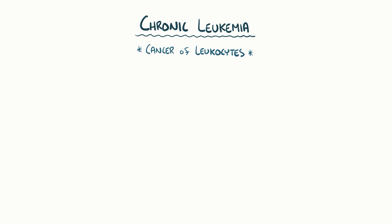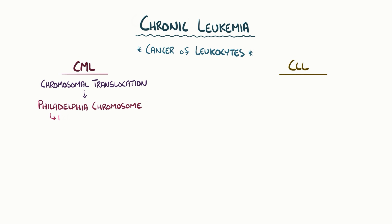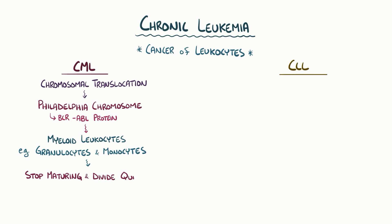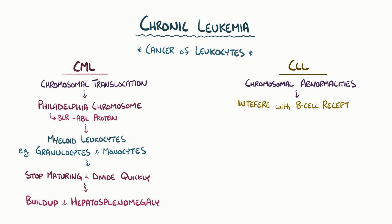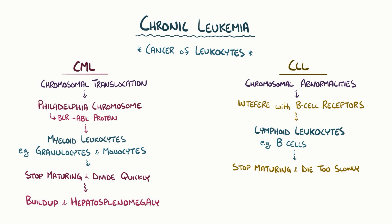As a quick recap: chronic leukemia is a cancer of the leukocytes that includes both chronic myeloid leukemia and chronic lymphocytic leukemia. In CML, chromosomal translocation results in a Philadelphia chromosome, which codes for a protein called BCR-ABL. As a result, myeloid leukocytes like granulocytes and monocytes stop maturing and reproduce too quickly, building up in the liver and spleen and causing hepatosplenomegaly. In CLL, a variety of chromosomal abnormalities interfere with the pathways of B cell receptors, causing lymphoid leukocytes like B cells to stop maturing and die too slowly, building up mainly in the lymph nodes and causing lymphadenopathy. Both types cause a loss of normal blood cells, resulting in anemia, thrombocytopenia, and leukopenia.